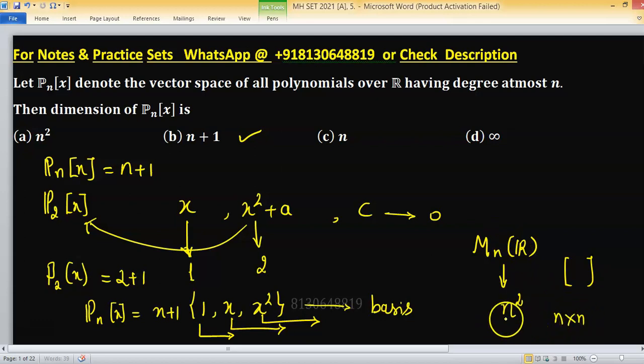In the case of M_n over C, the dimension of this vector space over R is n square two times, because for each element you are independent of two choices.